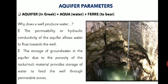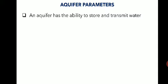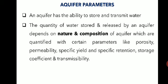The storage of groundwater in the aquifer is because of the porosity of the rock. An aquifer has the ability to both store and transmit water — that is what makes it an aquifer. The quantity of water stored or released by an aquifer depends on the nature and composition of the aquifer, which are quantified with parameters like porosity, permeability, specific yield, specific retention, storage coefficient, and transmissibility.